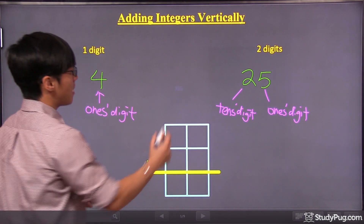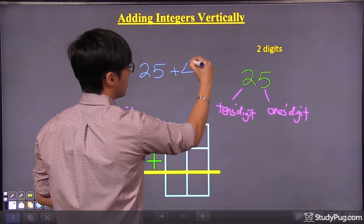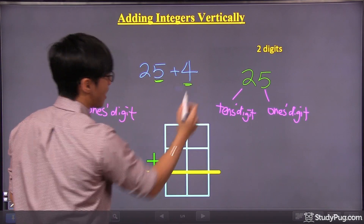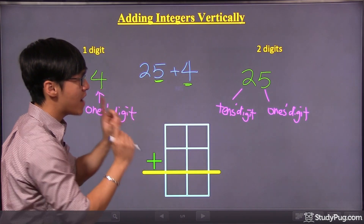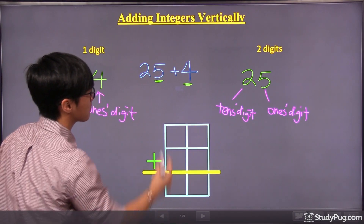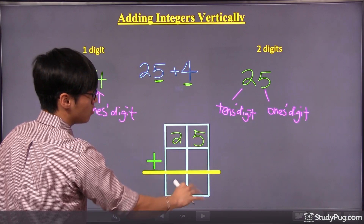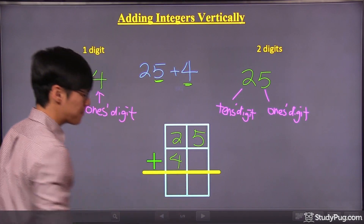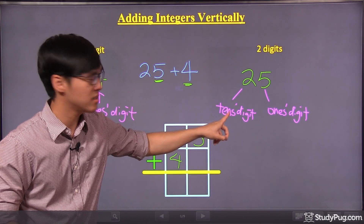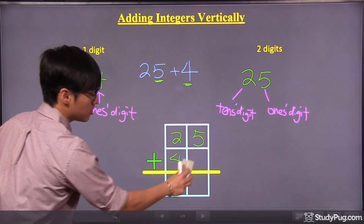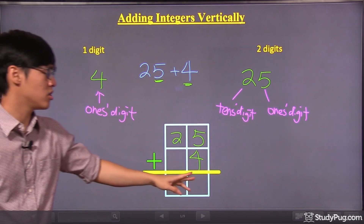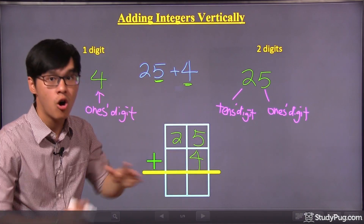For example, if I want to solve twenty-five plus four — which ones are the ones digits? The ones digits are the five and the four. So when we write it vertically, we have to make sure that the five and the four are in the same column. So write twenty-five with the five on the rightmost. You might think, should I put the four right next to the two? No, because the four is the ones digit, but the two is the tens digit — they are not lined up correctly. So the four should belong in the ones column, lined up under the five. Now this column corresponds to all the ones digits, and this column corresponds to all the tens digits.